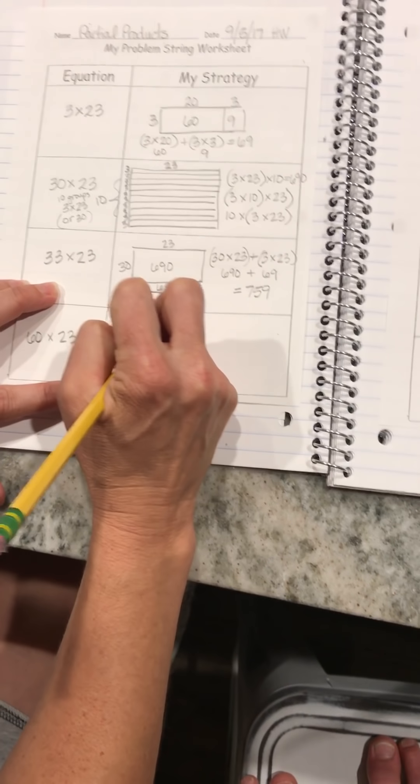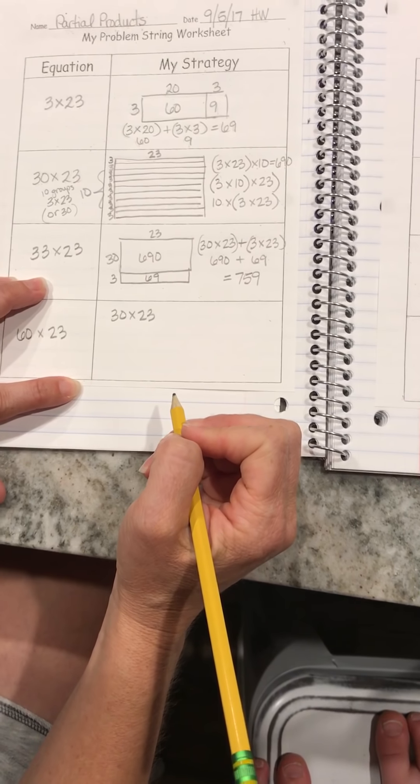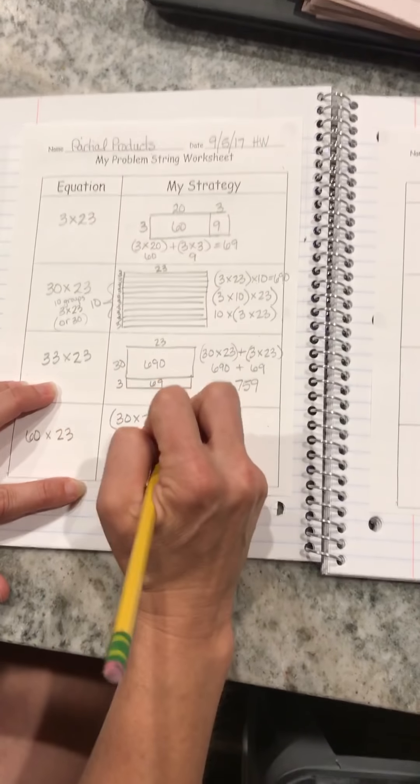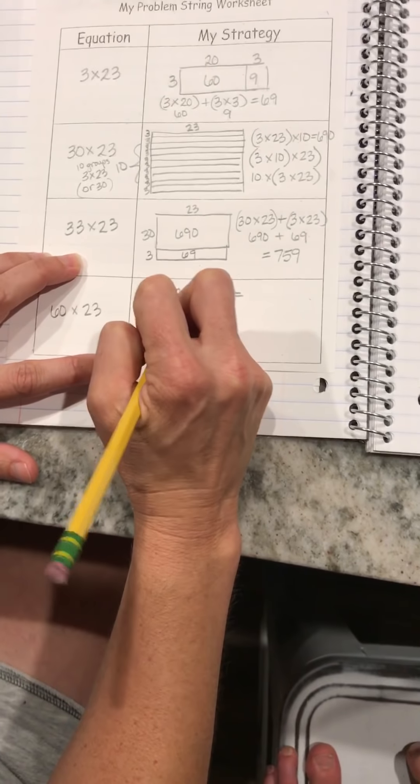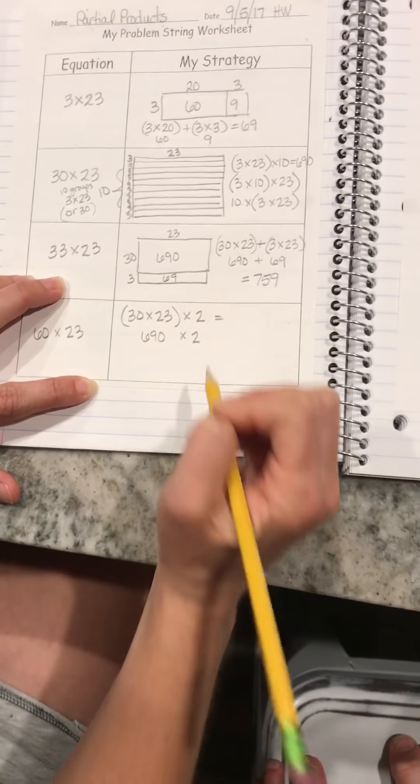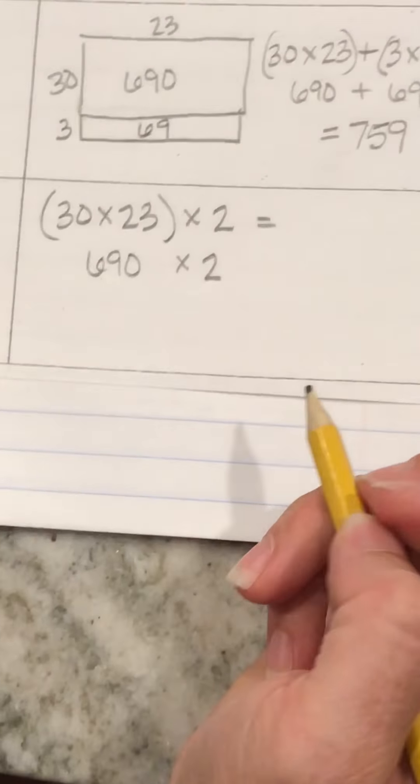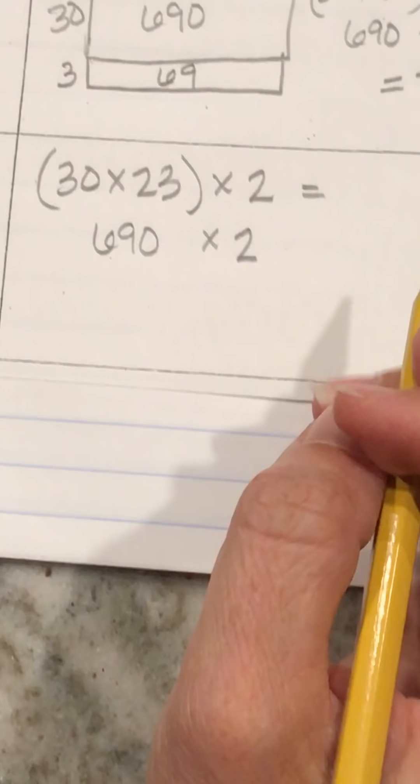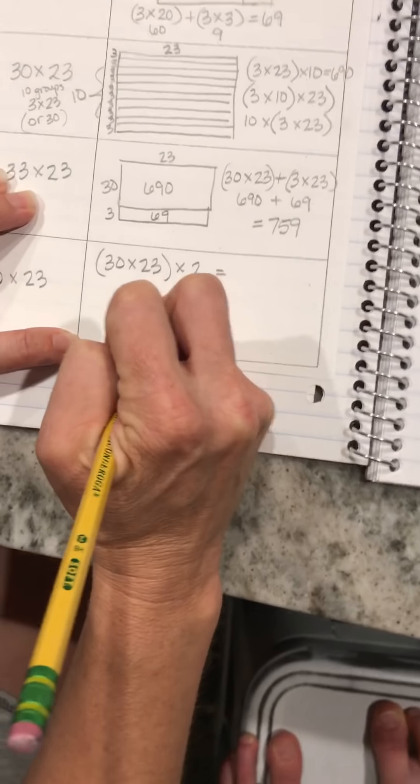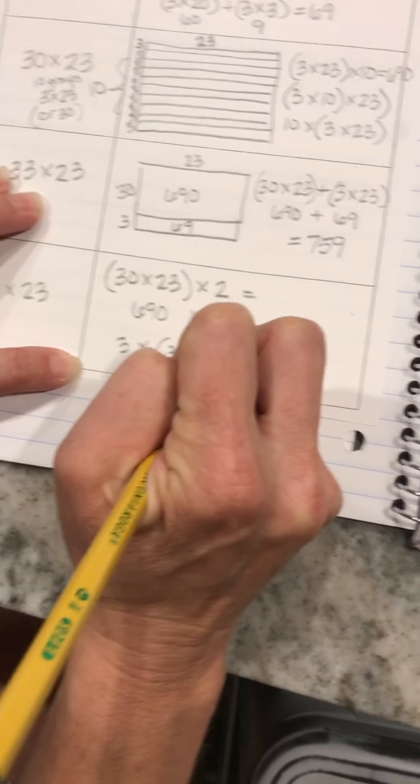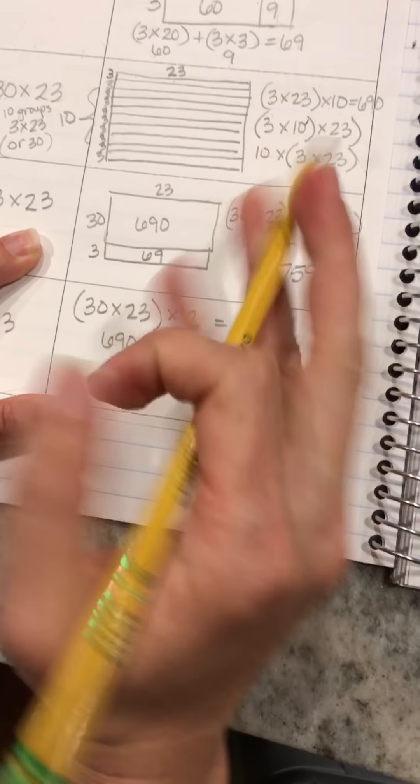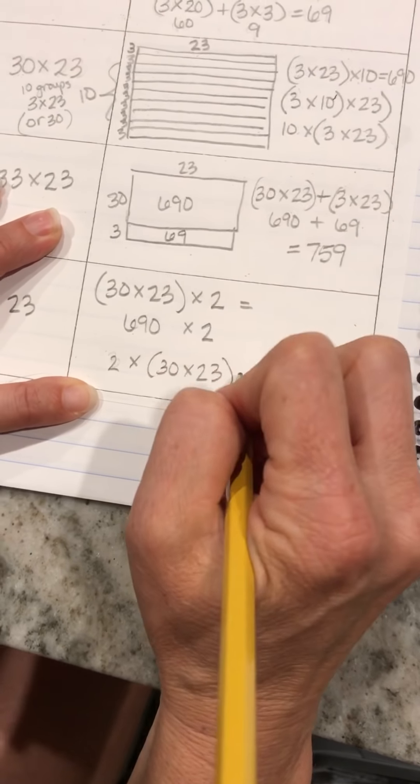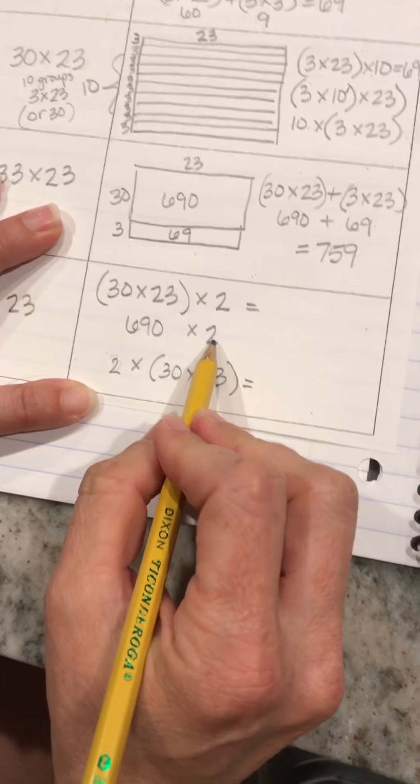So 30 times 23, if I use my information from my previous one and times that by 2, then I know that it's 690 times 2. Or I can also do 2 times 30 times 23. Either way, it would be 690 doubled.